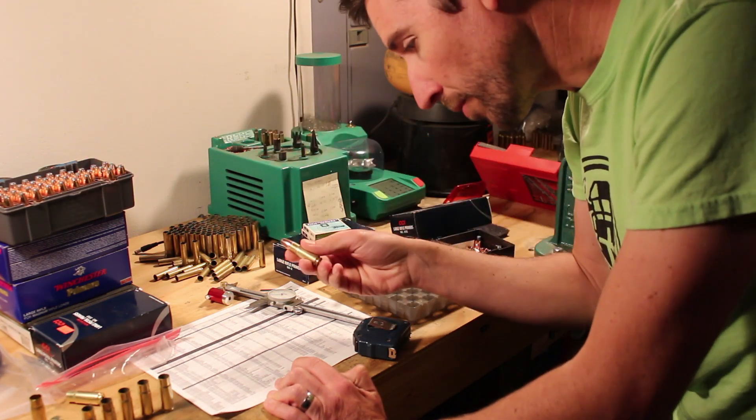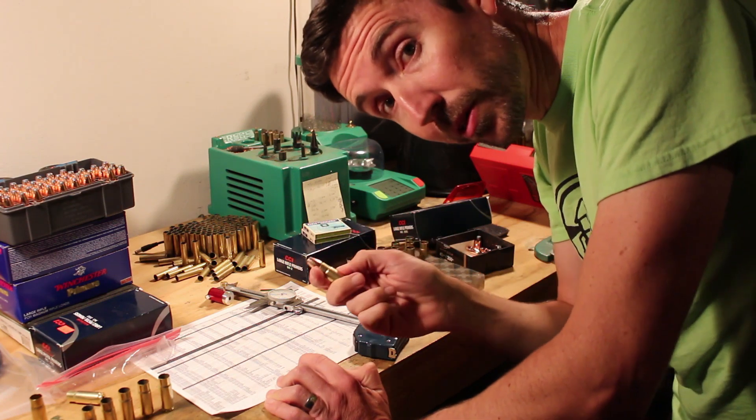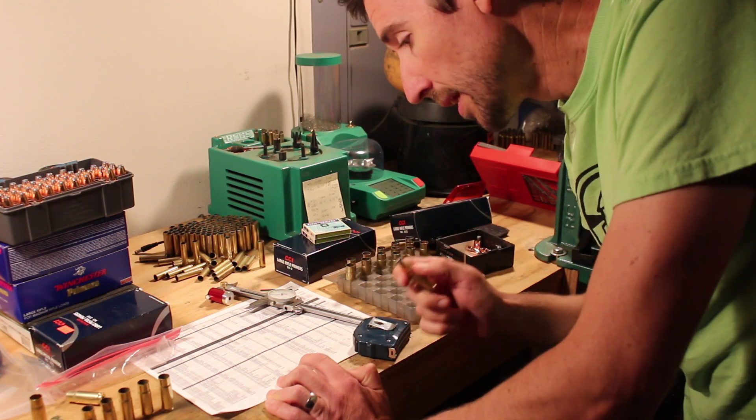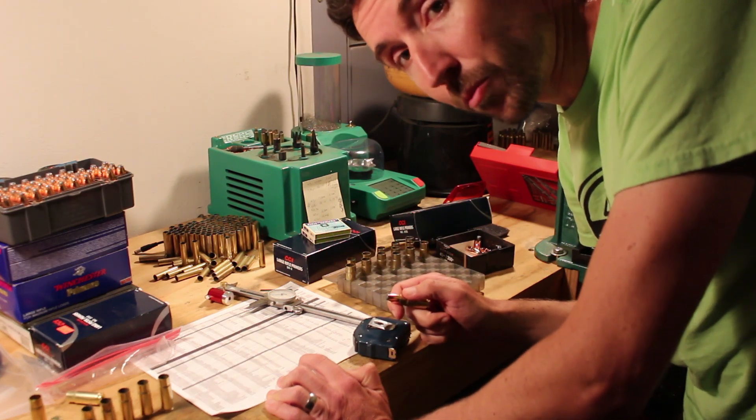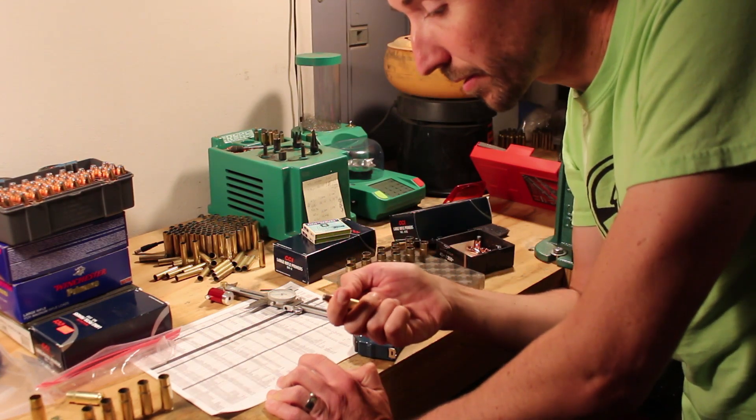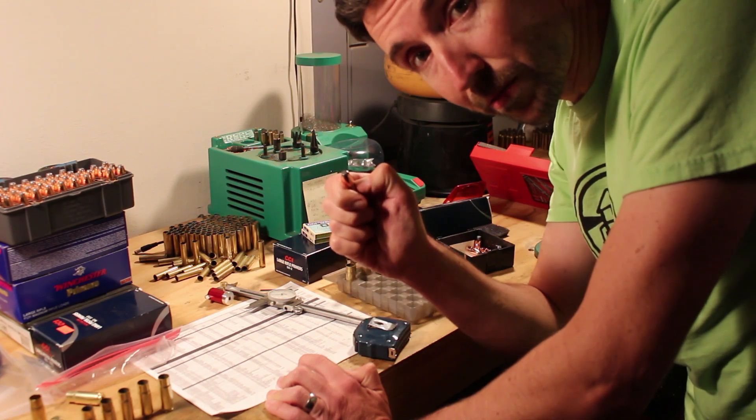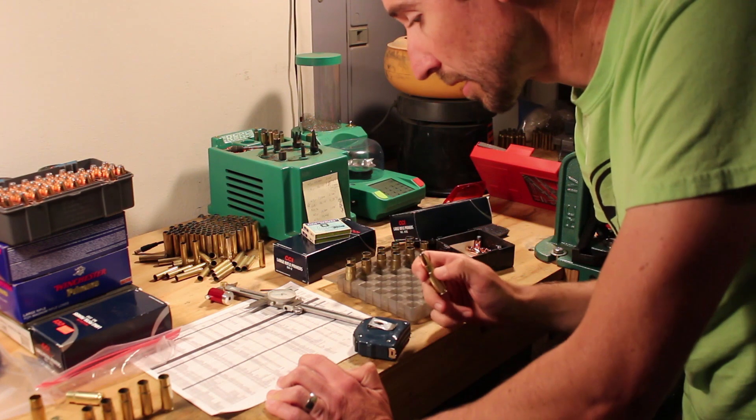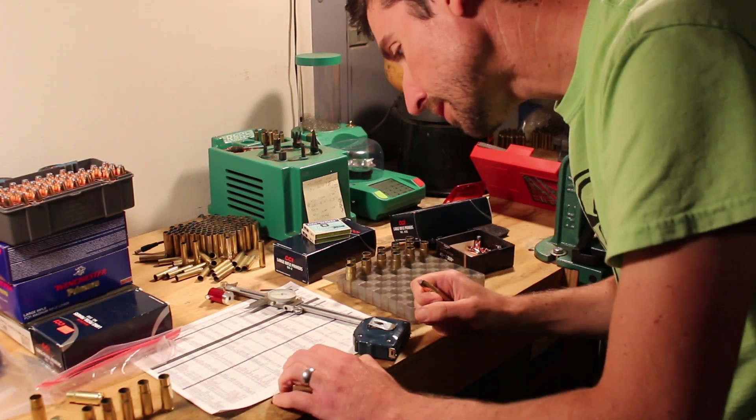All right here we go. This has a cartridge overall length of 2.198 inches. If you're loading to the ogive using the Hornady comparator set, it's going to be 1.719. That'll get you exactly there. If you get it kind of to the middle of the cannelure, you know just somewhere in the vicinity of the cannelure, you're gonna hit it.